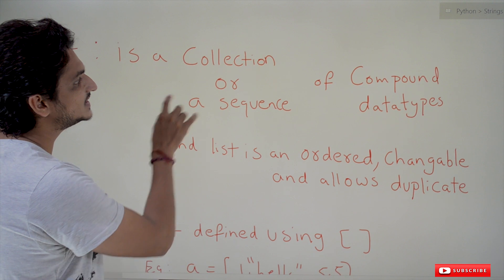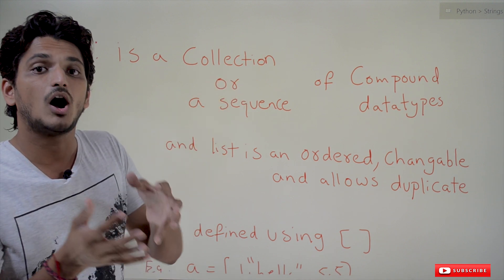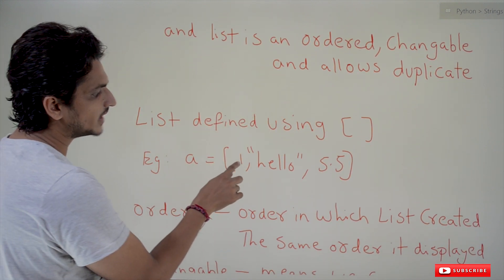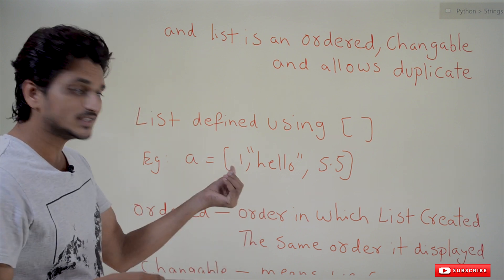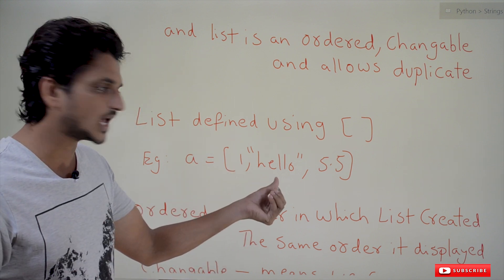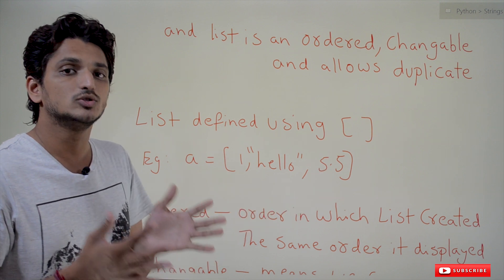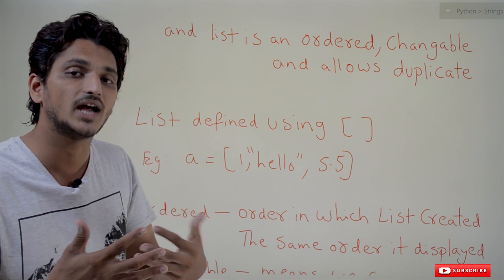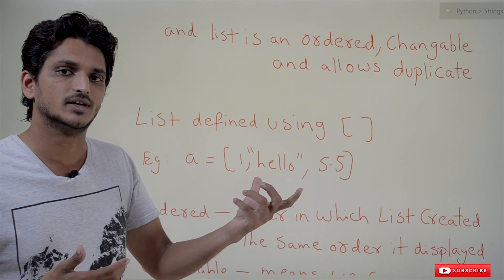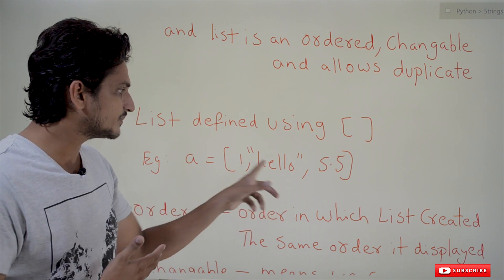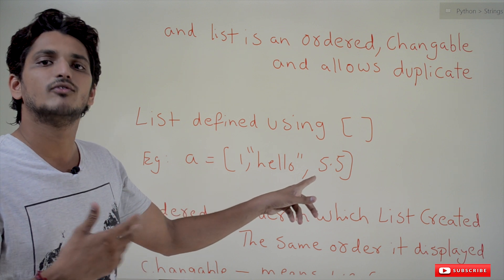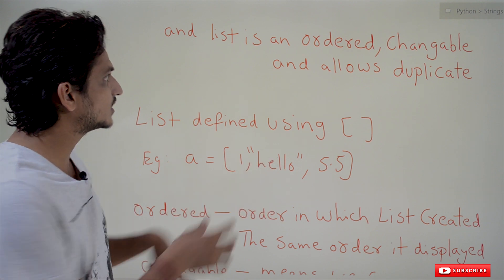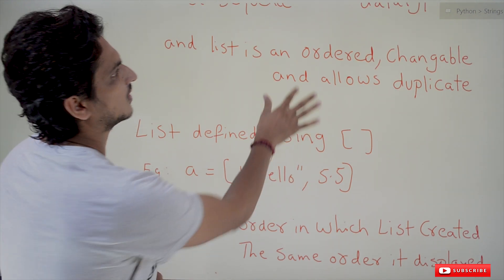The first point is a list is a collection or a sequence of compound data types. What is a string data type? Hello is a string data type. We can collect different data types in a list — that is what compound data types means. For example, 1 is an integer data type, Hello is a string data type, and 5.5 is a floating point data type. You can define any data type in the list.